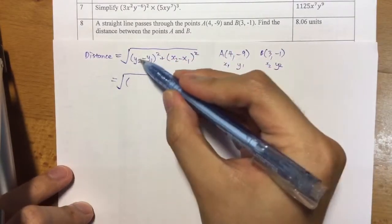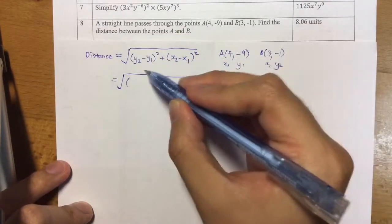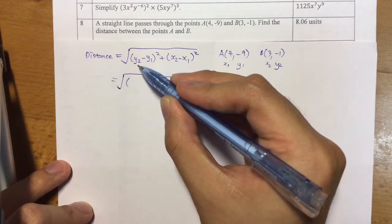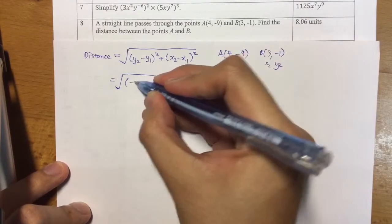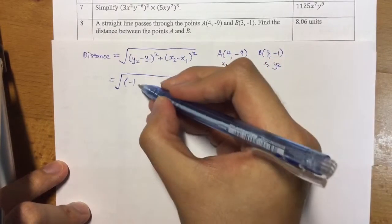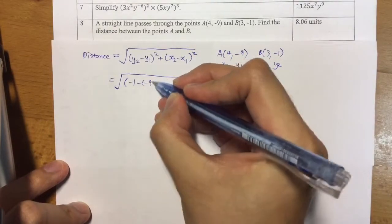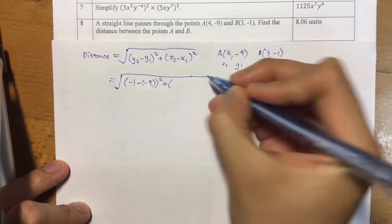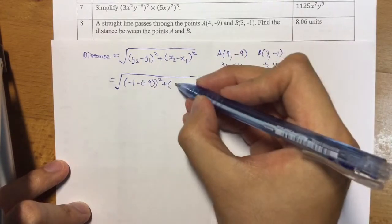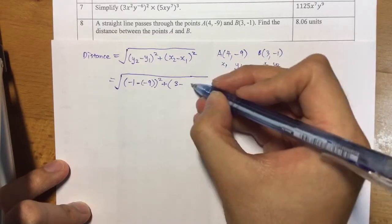Just be careful of the negative signs. So y2 minus y1 is negative one subtract negative nine - be really careful with that. In addition, x2 which is three minus x1 which is four, squared. I'll simplify this first before I punch it into my calculator.